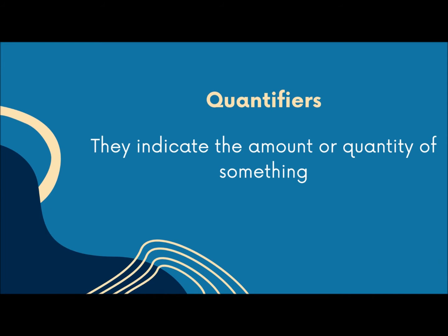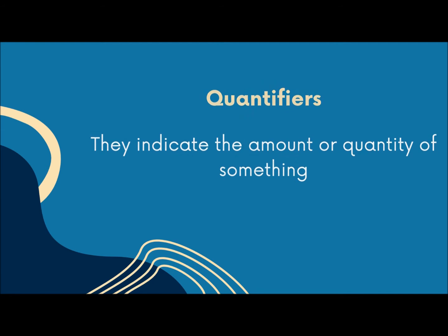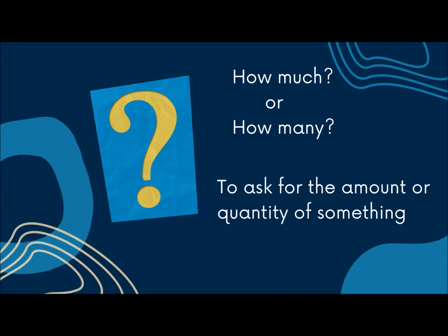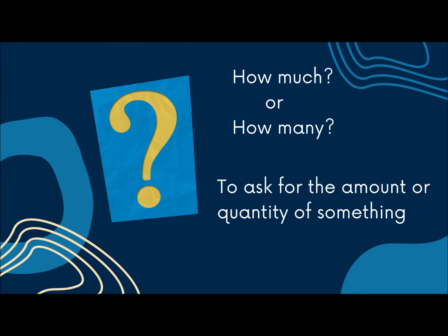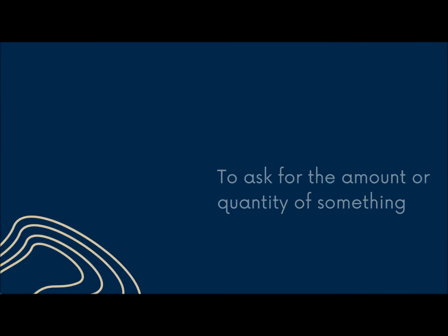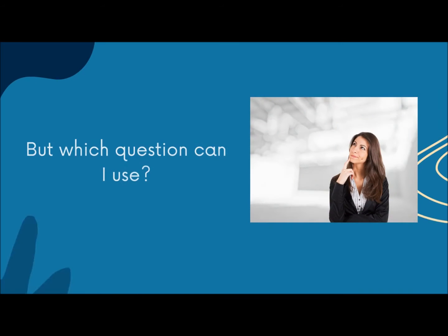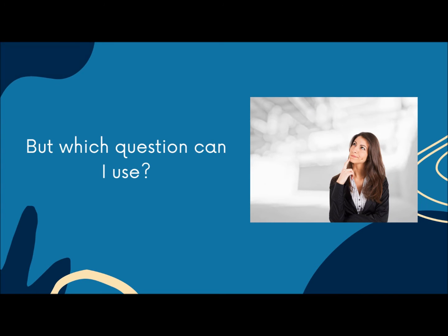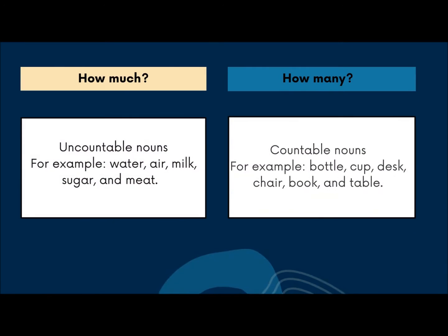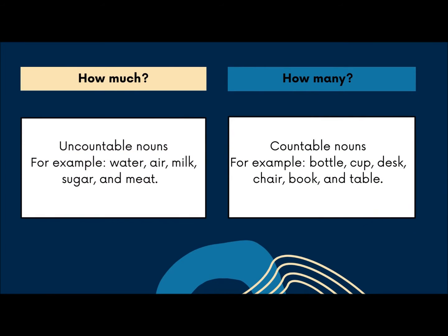Quantifiers are words that are used before nouns that indicate the amount or quantity of something. In this case, the question how much or how many is used to ask for the amount or quantity of something. But which question can I use? It will depend on the type of noun in the question.